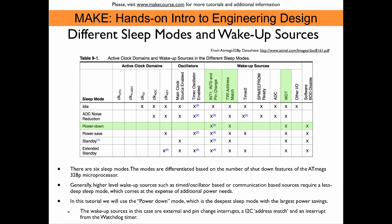Here we see a table from the ATmega328P datasheet, which can be downloaded from the atmel.com website. This table shows an overview of the different sleep modes — six in total — listed against the active clock domains, oscillators, and wake-up sources involved for each mode. The ATmega microcontroller has a number of clock sources and all of them draw some power. Depending on what wake-up features we want, we need to activate some of these clock domains or oscillators. Anything that needs to be woken up via a timer of course needs some active clock domains and oscillators.